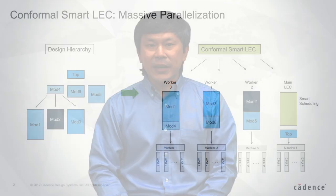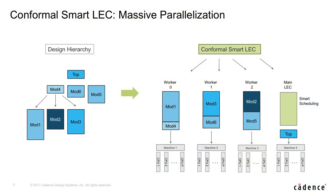Smart Lag is also massively parallelizable. It partitions the design and distributes proof strategies across multiple machines and multiple cores. This delivers the fastest verification turnaround time, even with larger and larger designs.